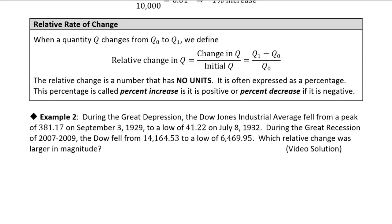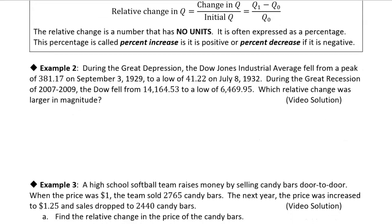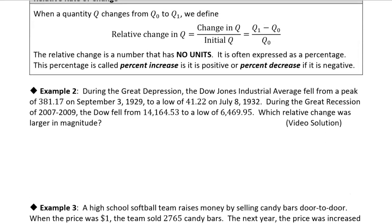So let's look at this example, too. So during the Great Depression, I'll move it up a little bit so we can see. During the Great Depression, the Dow Jones Industrial Average fell from a peak of 381.17 on September 3rd, 1929 to a low of 41.22 on July 8th, 1932.